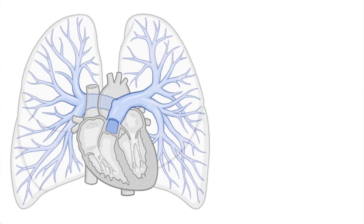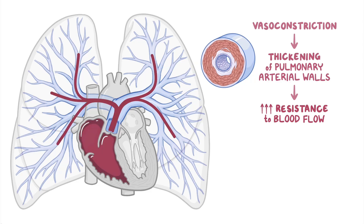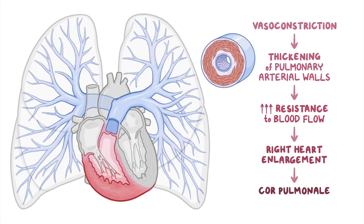Regardless of the cause, there is vasoconstriction and thickening of pulmonary arterial walls in PAH, resulting in increased resistance to blood flow. This places an added strain on the right heart as it tries pumping blood through a narrower vessel. Over time, overloading of the right ventricle leads to right heart enlargement, which in turn progresses to cor pulmonale, or right-sided heart failure.